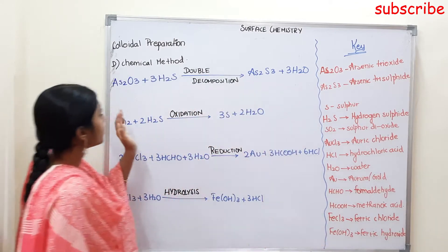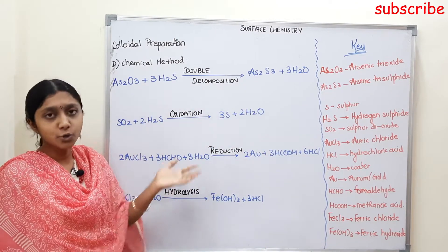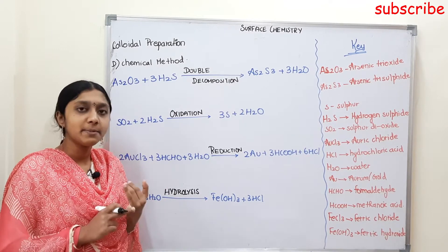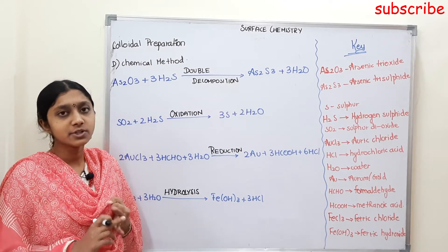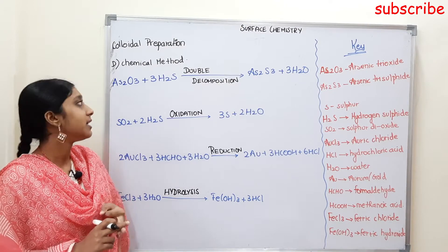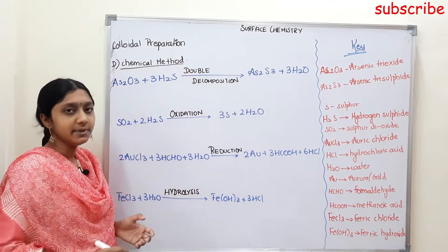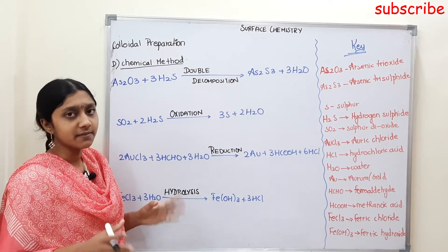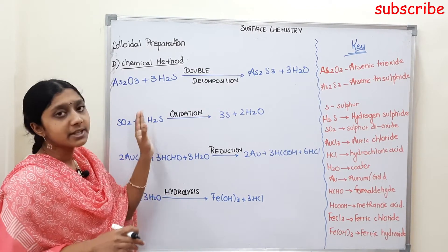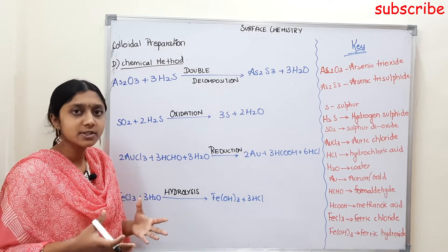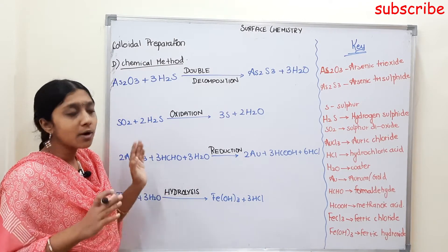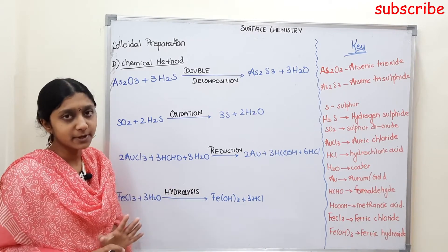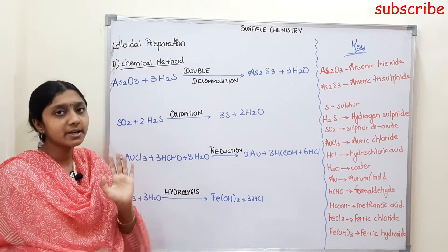So we will see the Colloidal Preparation Part 2. Part 1 covered Peptization, Ultrasonic Dispersion, and Mechanical Dispersion. The next method is the Chemical Method — using chemical reactions to prepare colloidal solutions. In your book, there are 4 reactions under the topic of Chemical Method.